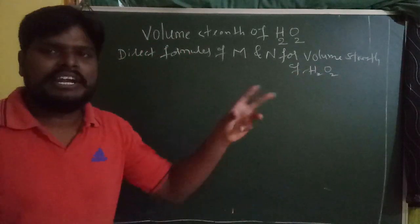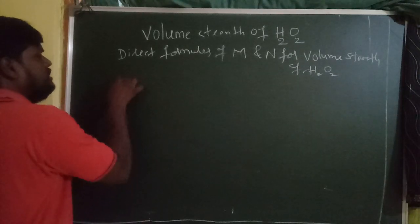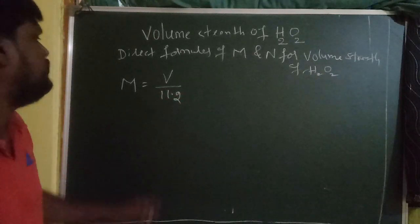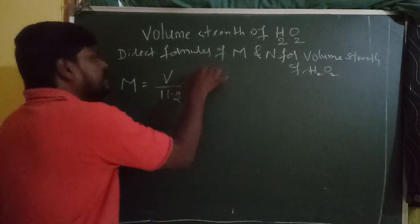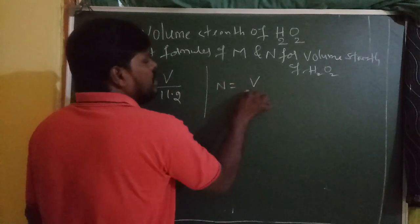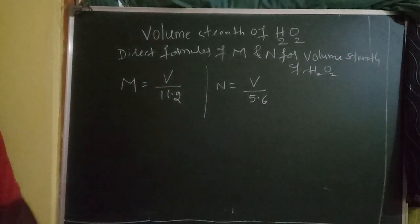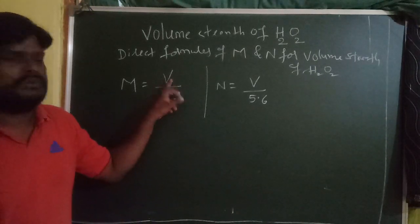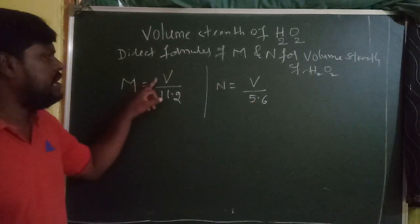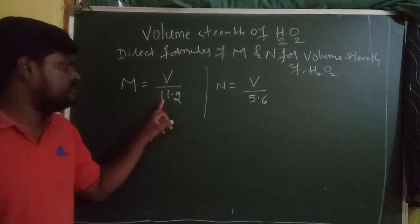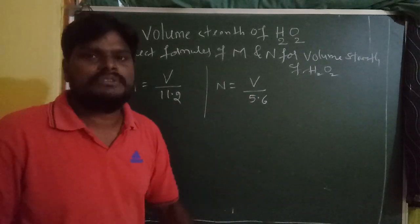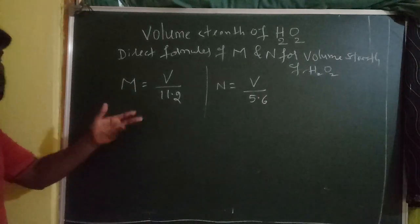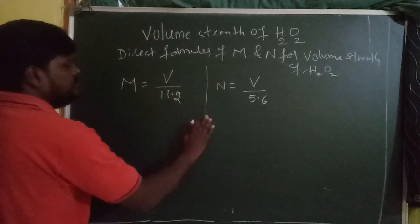The direct formulas are: Molarity = Volume Strength / 11.2, and Normality = Volume Strength / 5.6. Here, V refers to the volume strength of H₂O₂. So molarity equals volume strength of H₂O₂ divided by 11.2, and normality equals volume strength of H₂O₂ divided by 5.6.